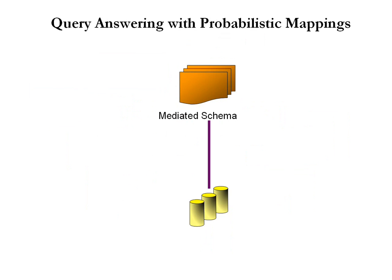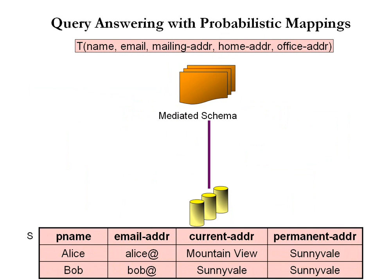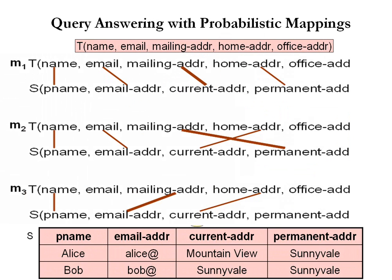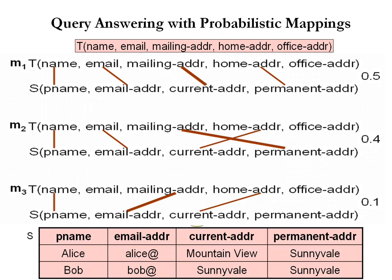We now illustrate the main idea using an example. Consider a data source and a metadata schema that both describe persons. A semi-automatic schema mapping tool may generate three possible mappings. As an example of uncertainty, M1 maps current address to mailing address, M2 maps permanent address to mailing address, while M3 maps email address to mailing address. They have probability 0.5, 0.4, and 0.1 respectively.